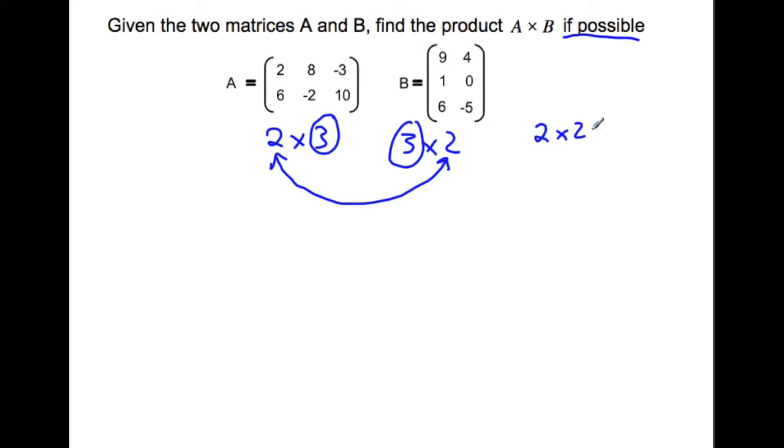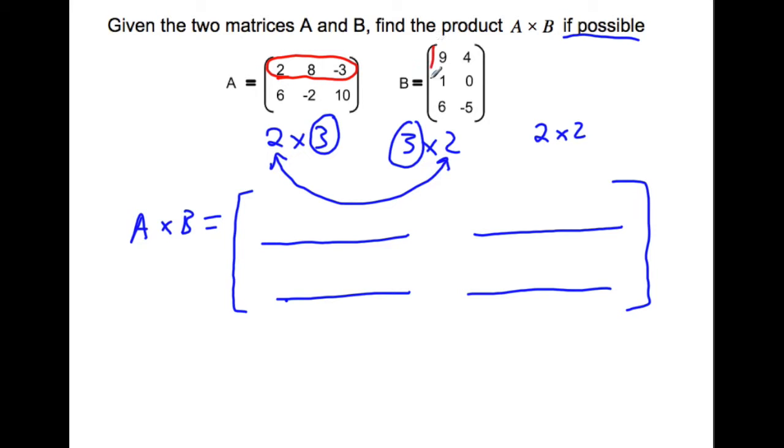Let's start doing A times B. I'll draw out the matrix with placeholders for the multiplication. To find what goes in the top left spot, that's the first row and first column spot of the answer. I use the first row of the first matrix and the first column of the second. We multiply 2 times 9 plus 8 times 1, and then negative 3 times 6.